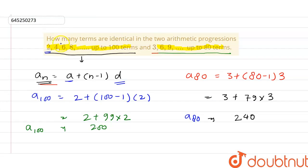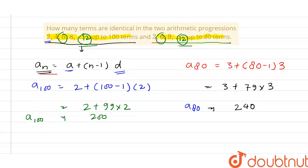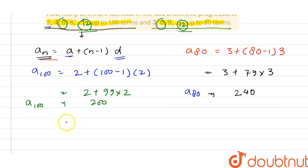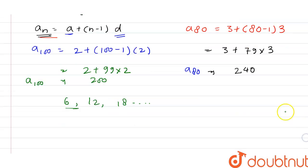Now, looking at both APs, we can see that 6 and 6 are common. Similarly, 12 will also be common in both series. So the identical terms are 6, 12, 18, and so on. These terms are identical in both APs, and this new series is itself an AP.